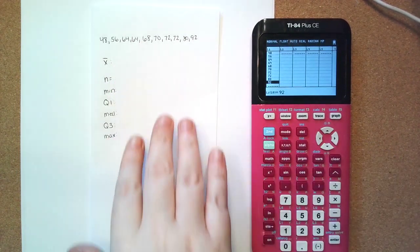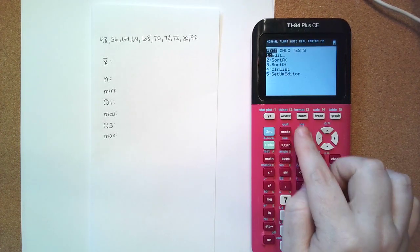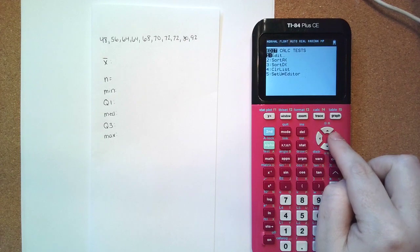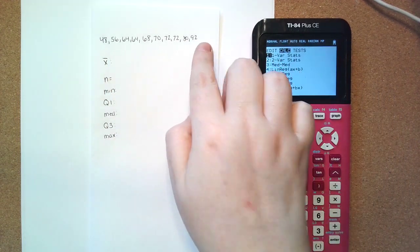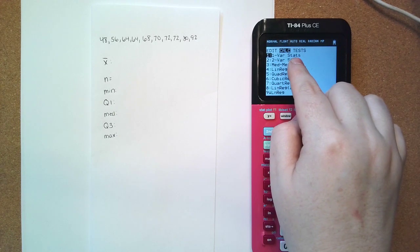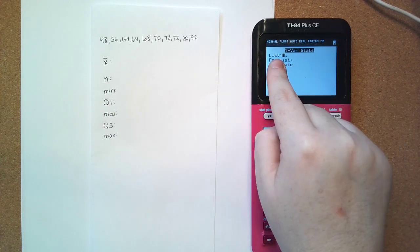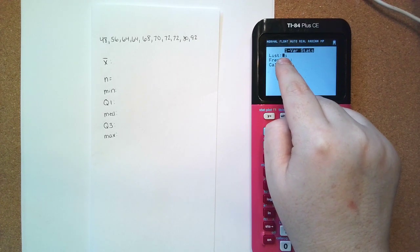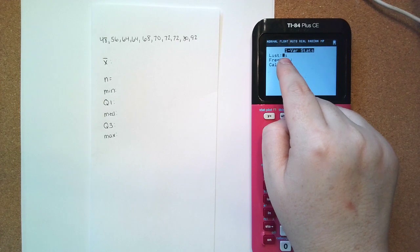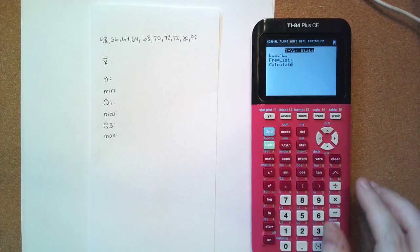Now we want to go and calculate our statistics. So we go back to our stat key for statistics, we want to calculate, so we press the right arrow key, and we want our one, since we only have one list, we want one variable statistics. So we're going to press enter on our one variable statistics. We want to make sure our list is in the correct location. We did put all of our values in L1, that means that it's in the correct list. We don't have anything with frequency list, we're going to go down to calculate.